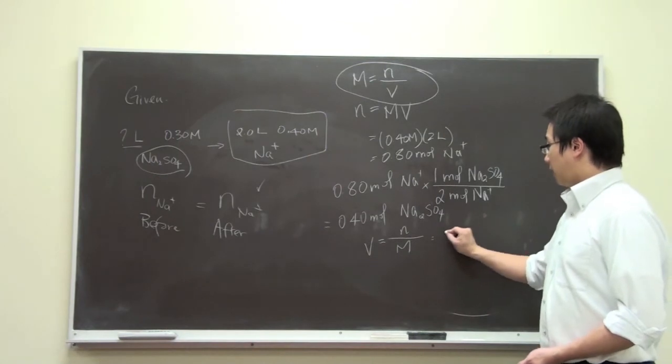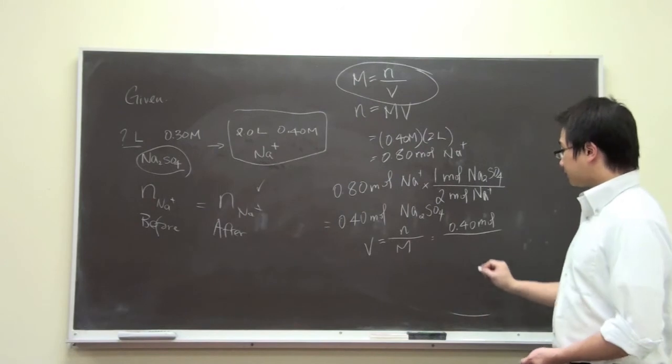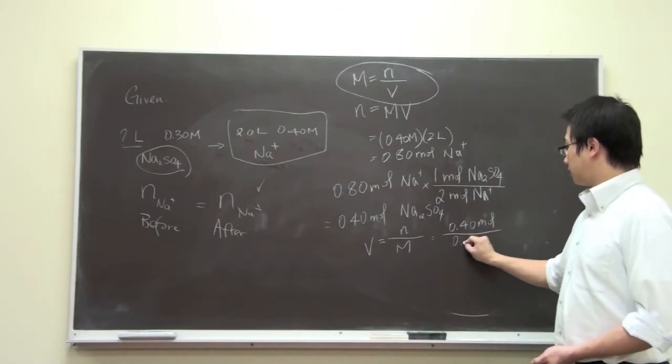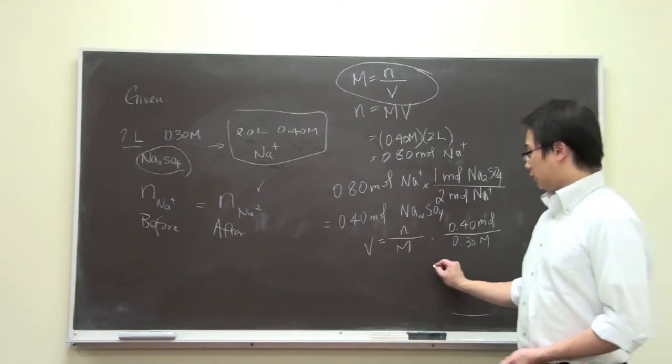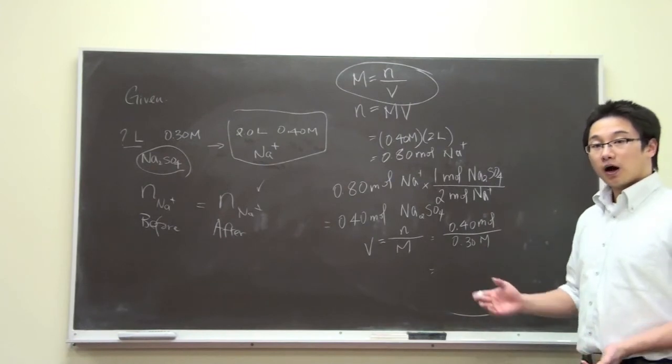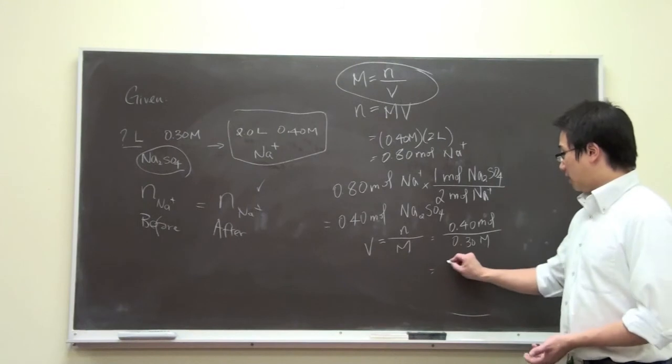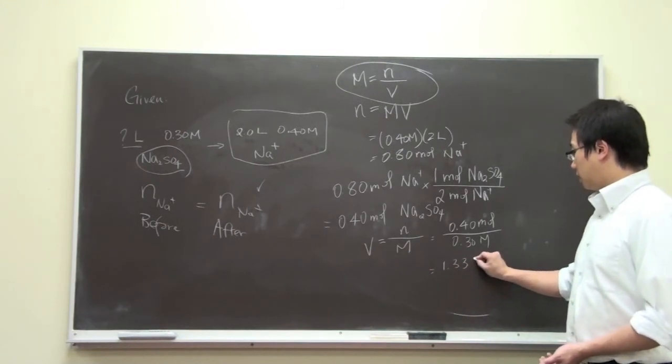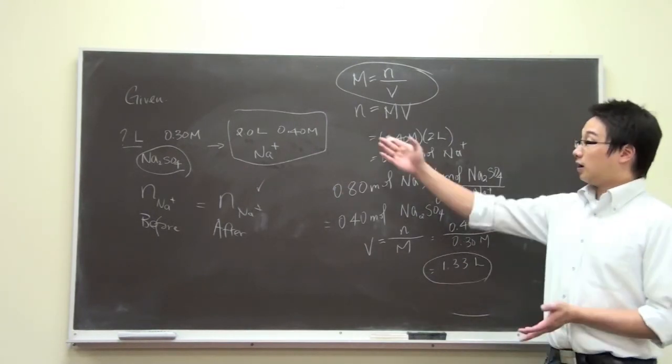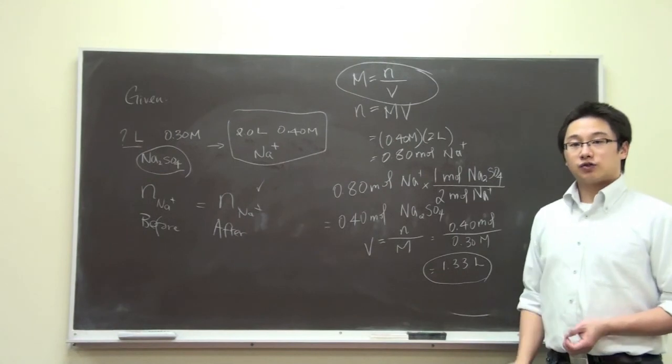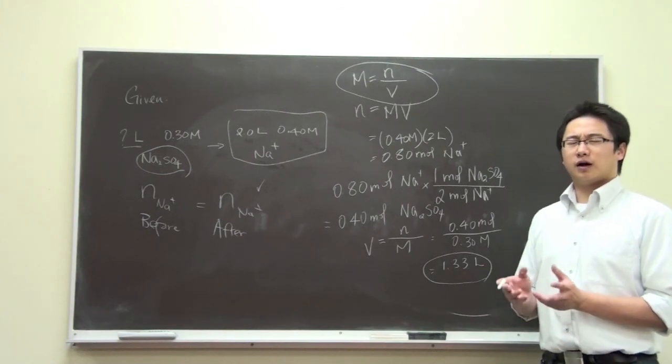And we have 0.40 mole over, the molarity is 0.3 molar. And if you use your calculator, or if you just do a simple fraction division, 0.4 over 0.3 is the same as 4 over 3, and that will give you 1.33 liter. This is the amount of the sodium sulfate solution required at the very beginning of the dilution.